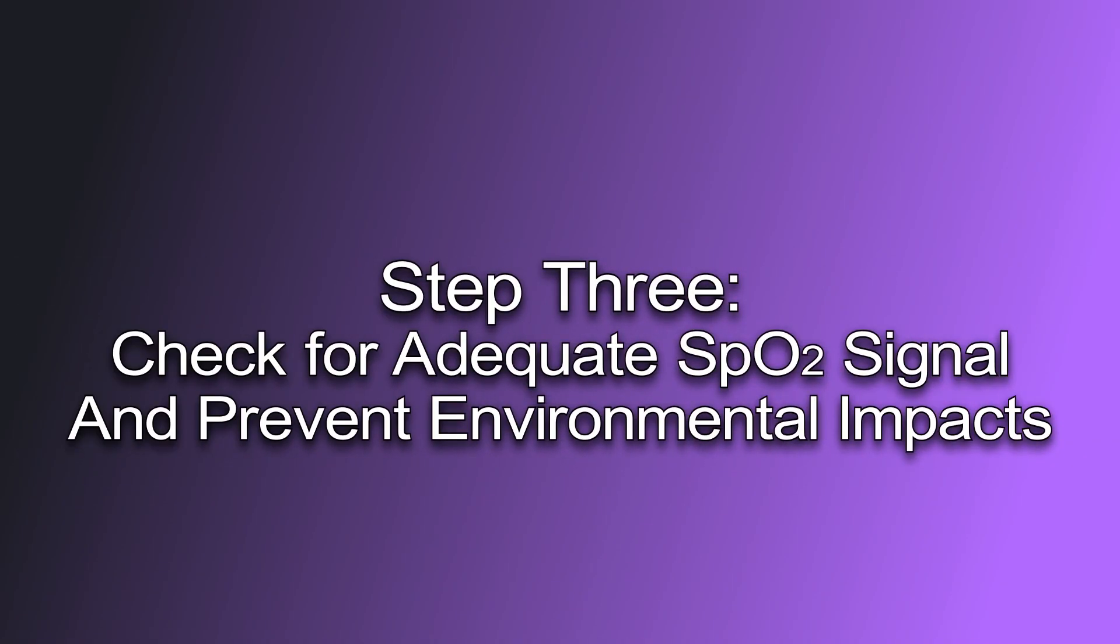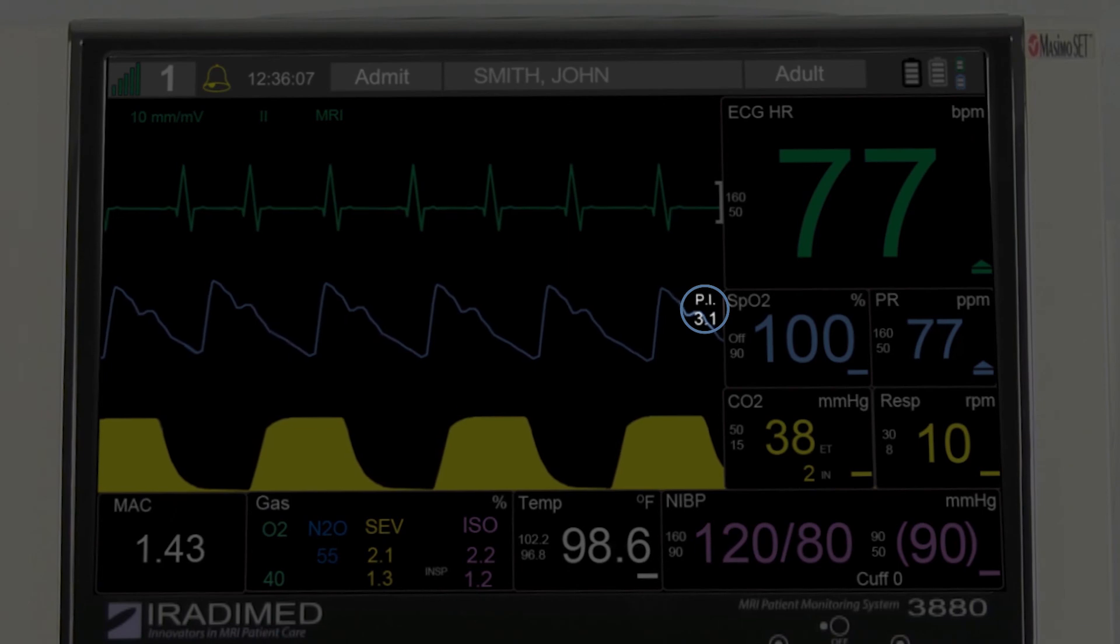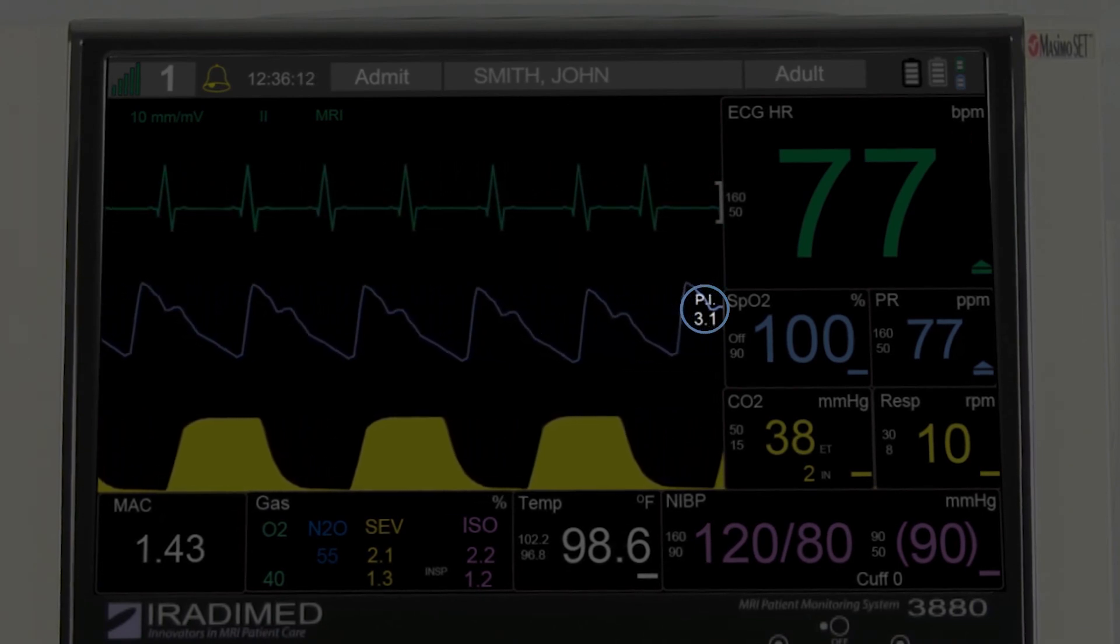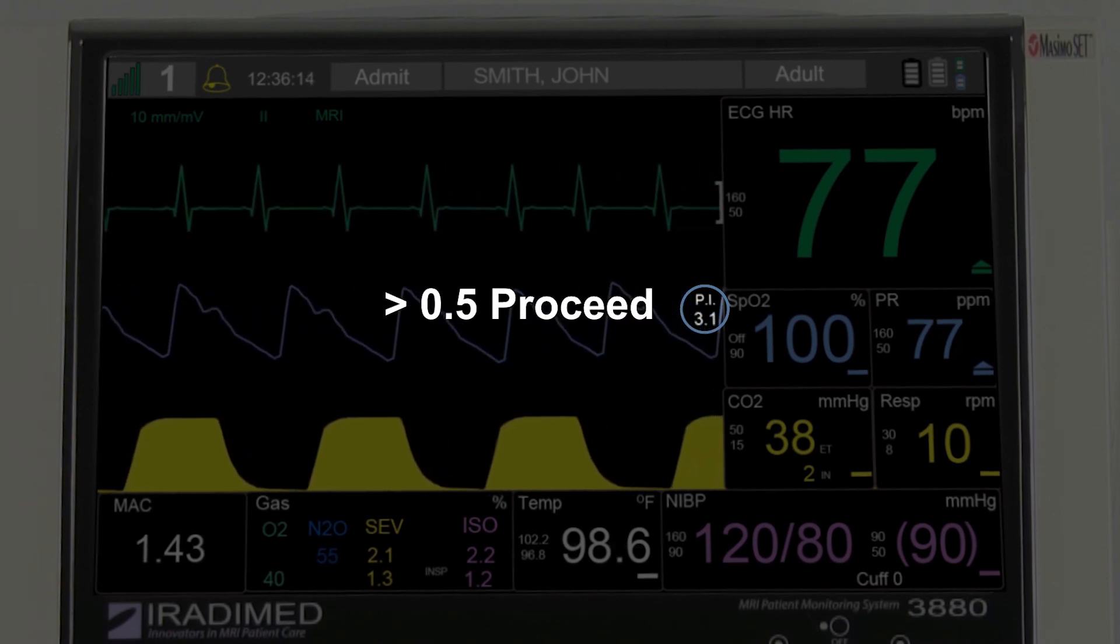Step 3: Check for adequate SpO2 signal and prevent environmental impacts. Check the perfusion indicator to ensure ample signal is being detected by reviewing the PI number on the SpO2 waveform. If the signal is greater than 0.5, then proceed.